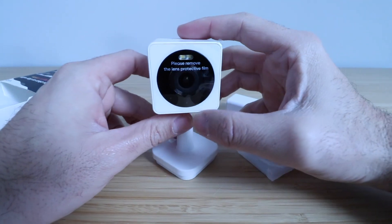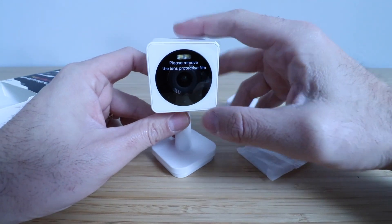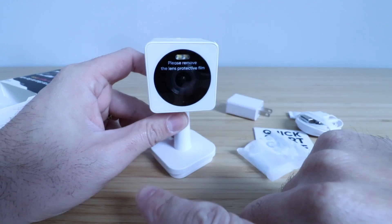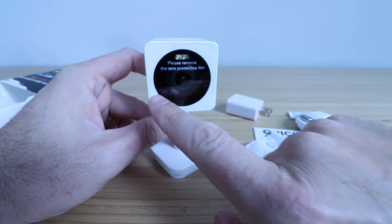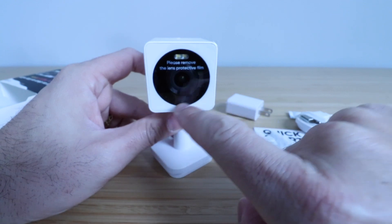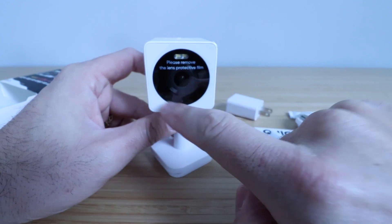And then you can remove this protective film. It looks like we've got an illuminator right here, we've got our camera sensor, and then it looks like we've got maybe some microphones or additional illuminators down here.